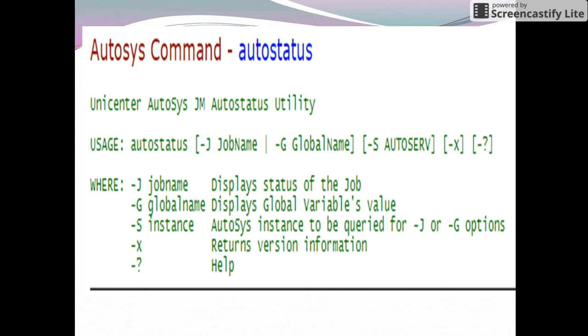This is the usage of autostatus. Autostatus has options like -j for job name, -g for global variable, -s for instance, -x for version information, and -? for help. We will discuss all these options with examples.